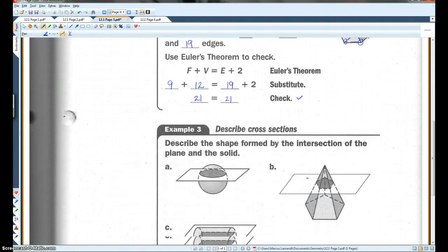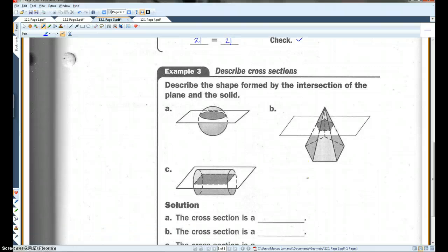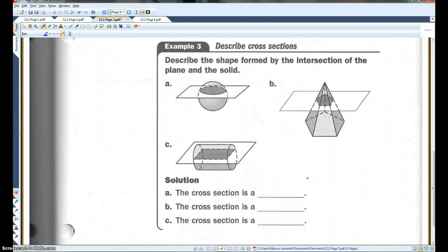Example three, describe cross sections. Describe the shape formed by the intersection of the plane and the solid. This one, we have a sphere intersected by a plane. The cross section is going to be a circle.